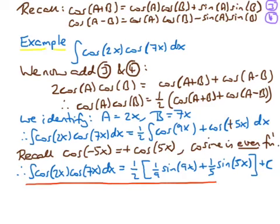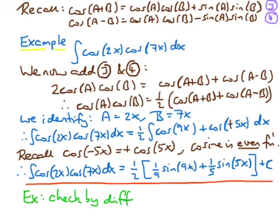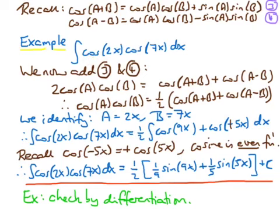This is our result for the integral. I encourage you to check it by differentiation — differentiating will give sines, and then using the fact that 9x = 2x+7x with equation 3, and 5x = 7x−2x with these equations, working backwards, you will return to your original integrand. You may also need to use the even property of cosine. With that, I will stop this video. Thank you.